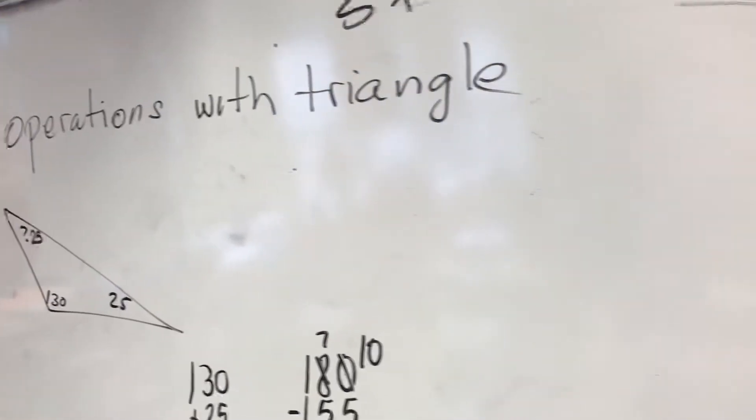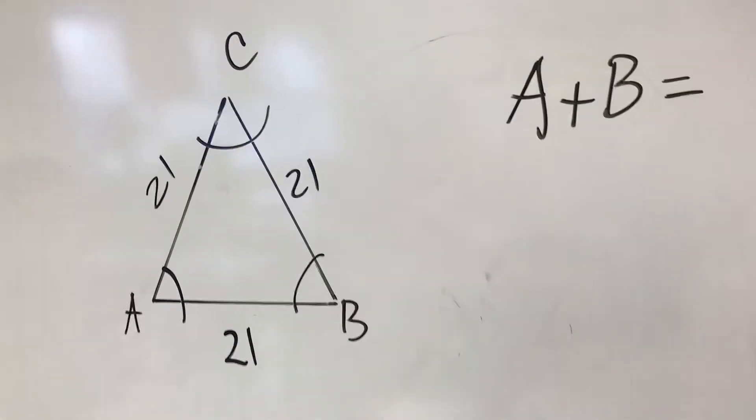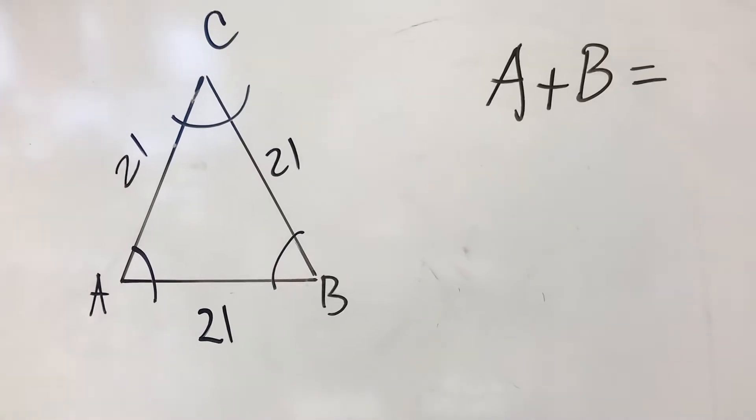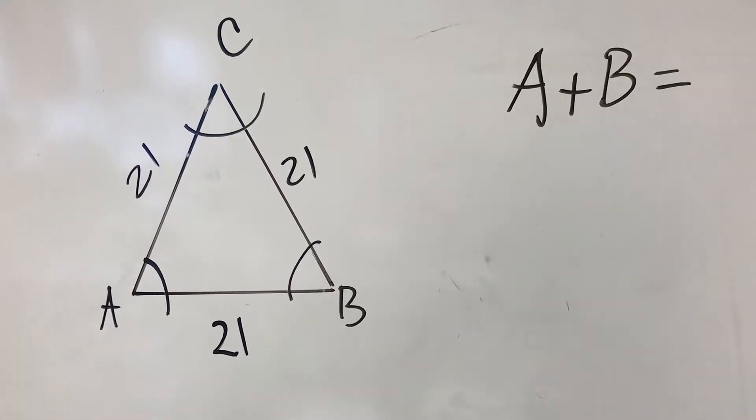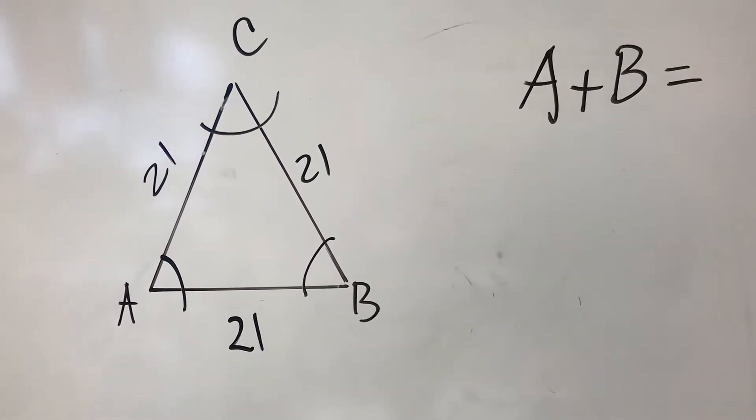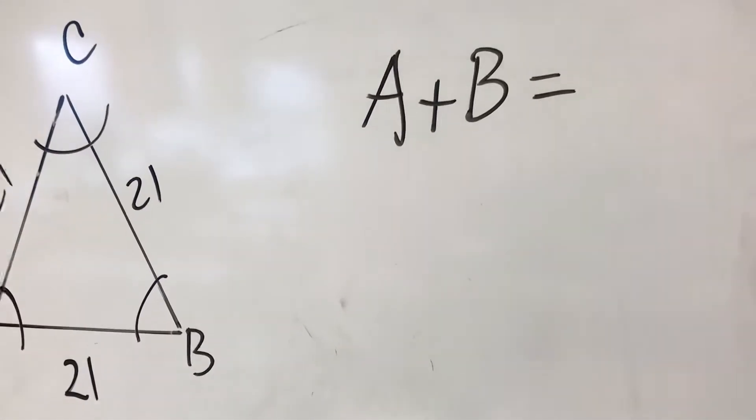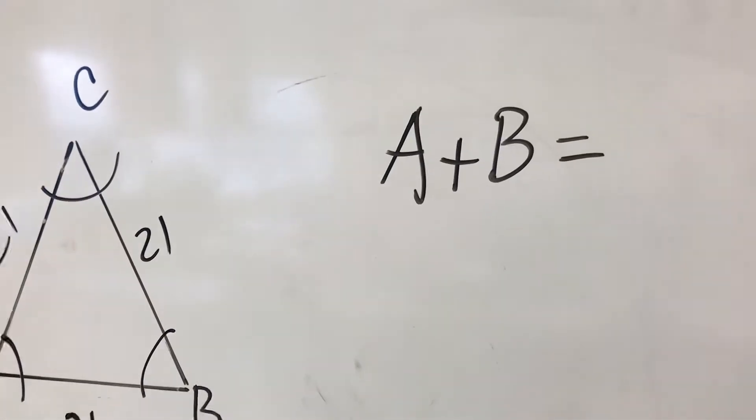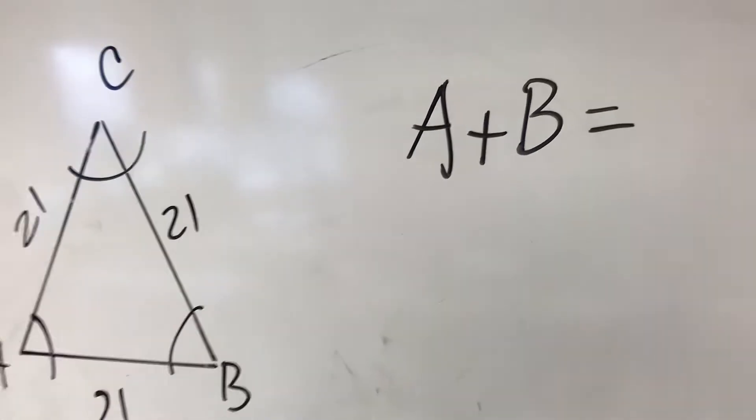We are doing operations with a triangle, and we have this triangle here. I put the numbers, which is 21, 21, 21, and then ask the students, how much is the addition of angle A plus angle B?